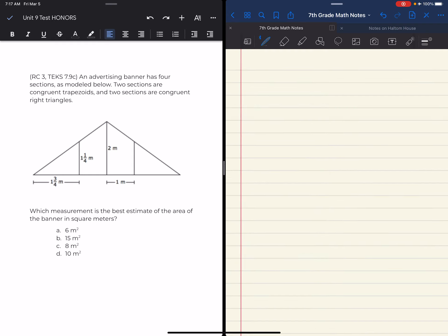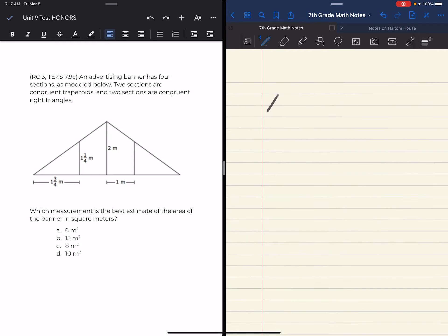So I'm going to find the area of one of the triangles and just multiply it by two. And then I'm going to find the area of one of my trapezoids - base one plus base two times height divided by two - and then multiply it by two. All right, so now let's go through and try to find our dimensions.